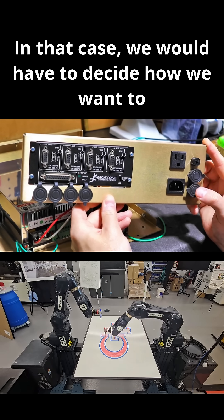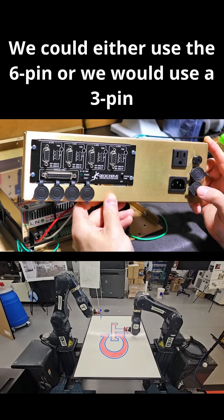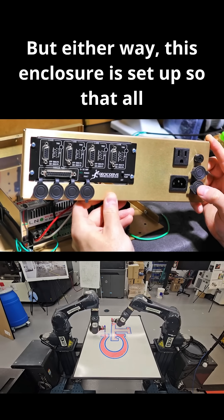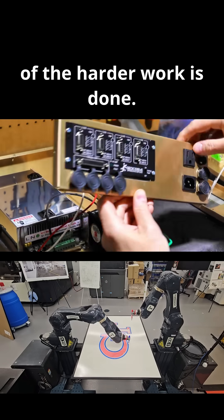In that case, we would have to decide how we want to do that. We could either use the 6-pin, or we would use a 3-pin in conjunction with the 6-pin. Typically, you'd use a 6-pin, but either way, this enclosure is set up so that all of the harder work is done.